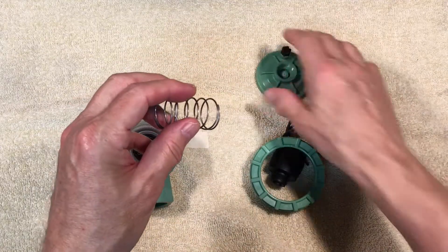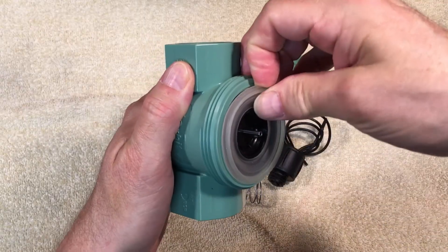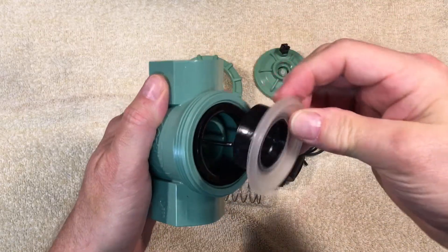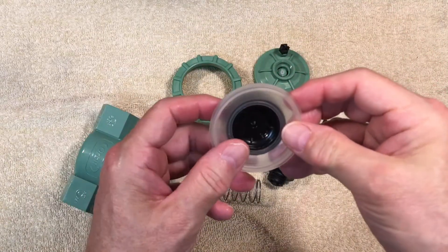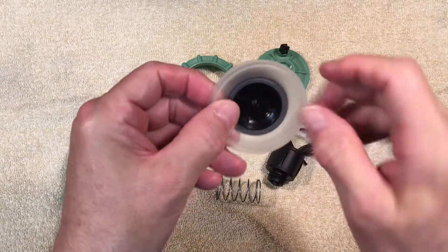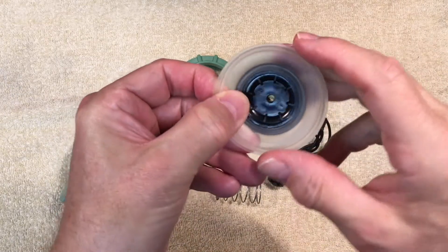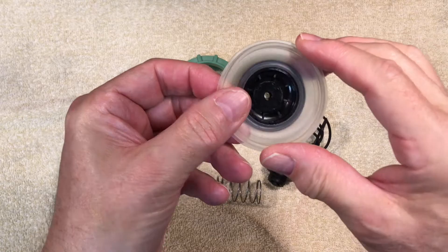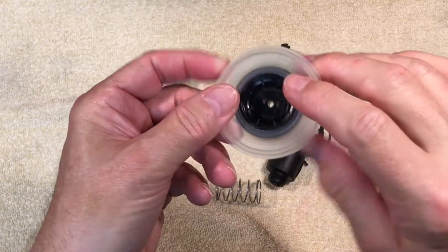Looking inside, you will see a flexible diaphragm. Pull it out. The diaphragm is made of two parts. The middle is hard plastic with a hole in it. The part with the hole rides up and down on the stainless steel tube mounted inside the housing.